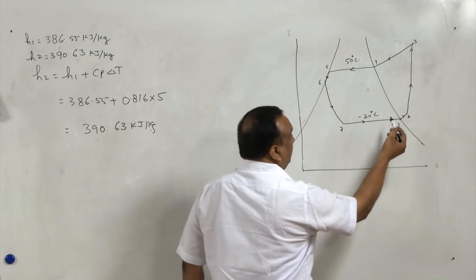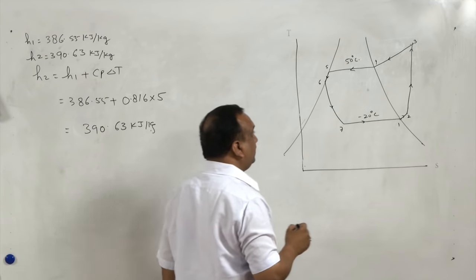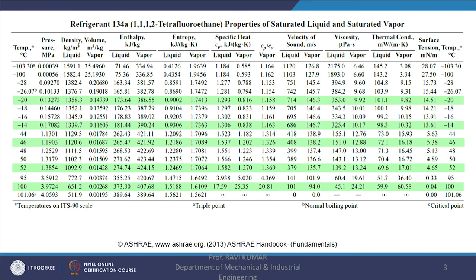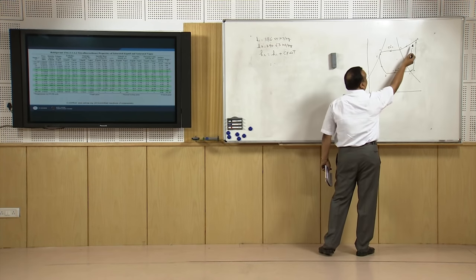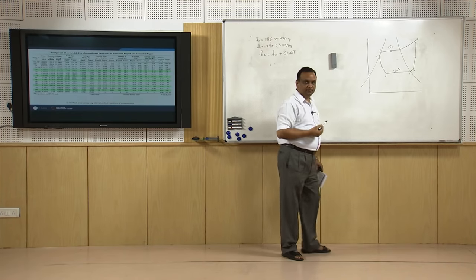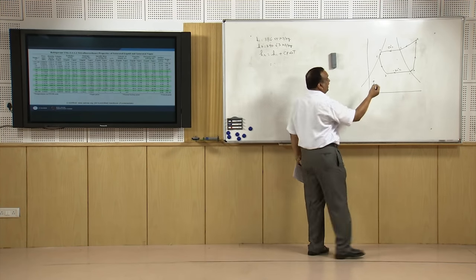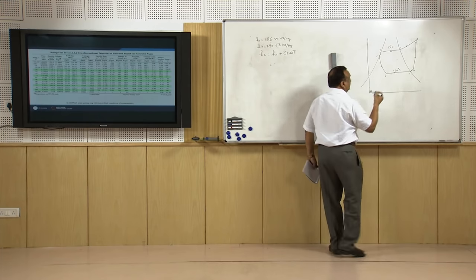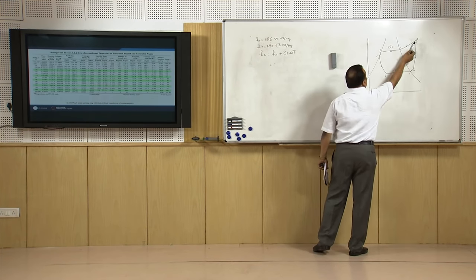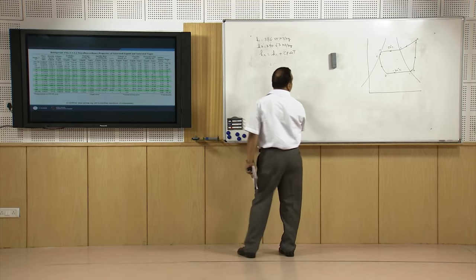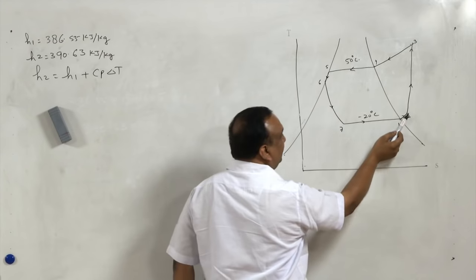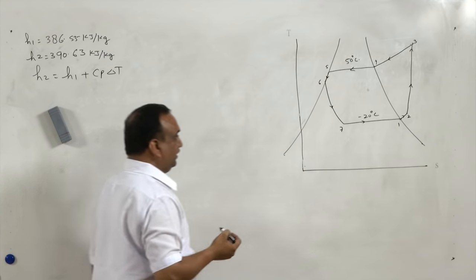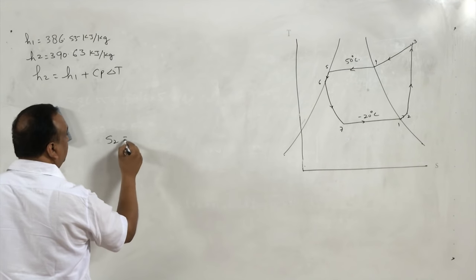In order to find the compressor work we need the enthalpy at state 3. Since it is in a superheated state, we do not have its properties directly, but we have enthalpy at state 4. If we know the temperature at state 3, we can find the enthalpy at state 3. The temperature at state 3 is not known, but we know that entropy at state 2 is equal to entropy at state 3, since compression is isentropic. So S2 equals S3.